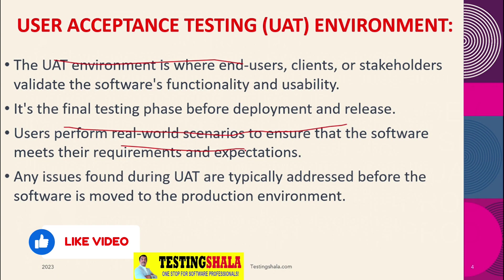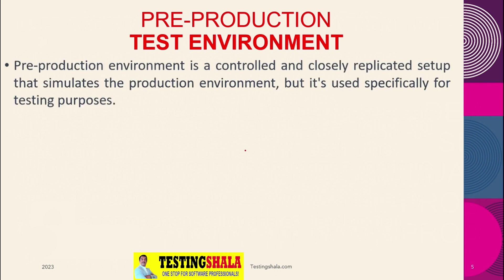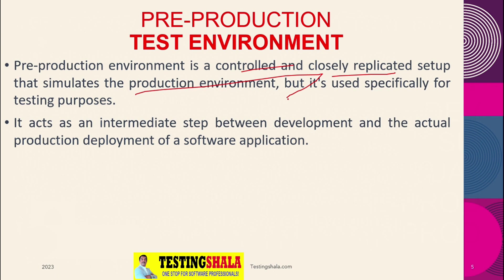After UAT, the next step is either going to pre-production or directly into production. The pre-production test environment is a controlled environment that closely replicates and simulates the production environment — it almost mimics production. Test data is normally created or mimicked to resemble what is available in the production environment. It is an intermediate environment between development and actual production deployment.